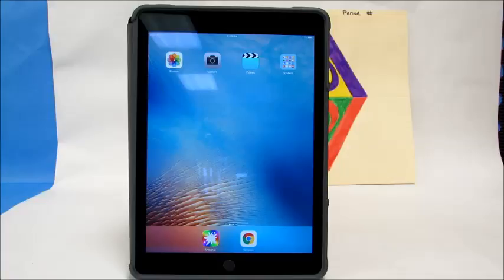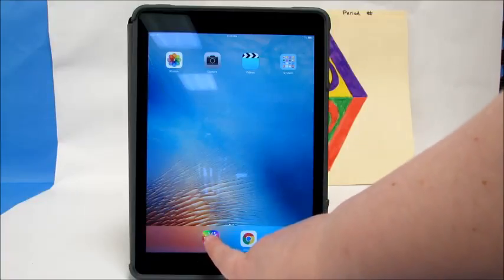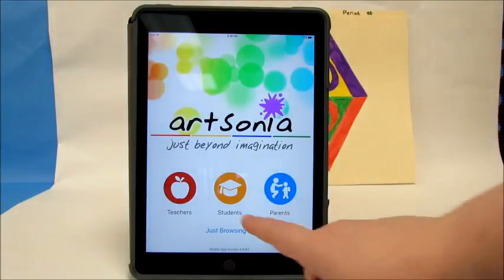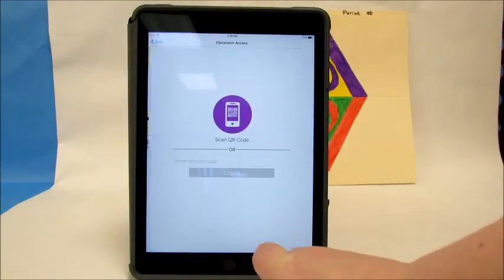To start, you need to press the Artsonia app on the bottom of your screen. This brings up the main page. You'll log in under the student button in the middle of the paper.